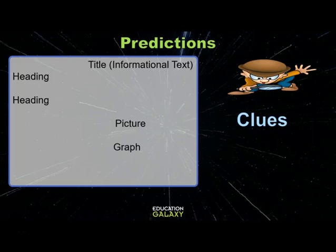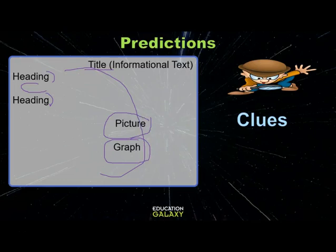In informational texts, you can guess what the text is about by reading the title. Each heading or subheading tells you what the paragraph is going to be about. You can also make predictions based on the picture or the graph. By looking at these things in a text, you can make a prediction of what the passage will be about.